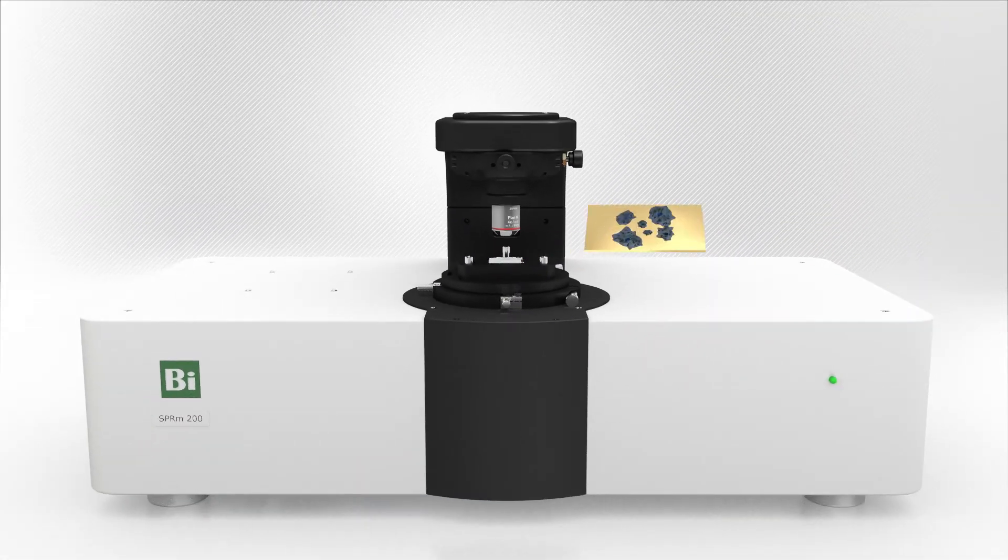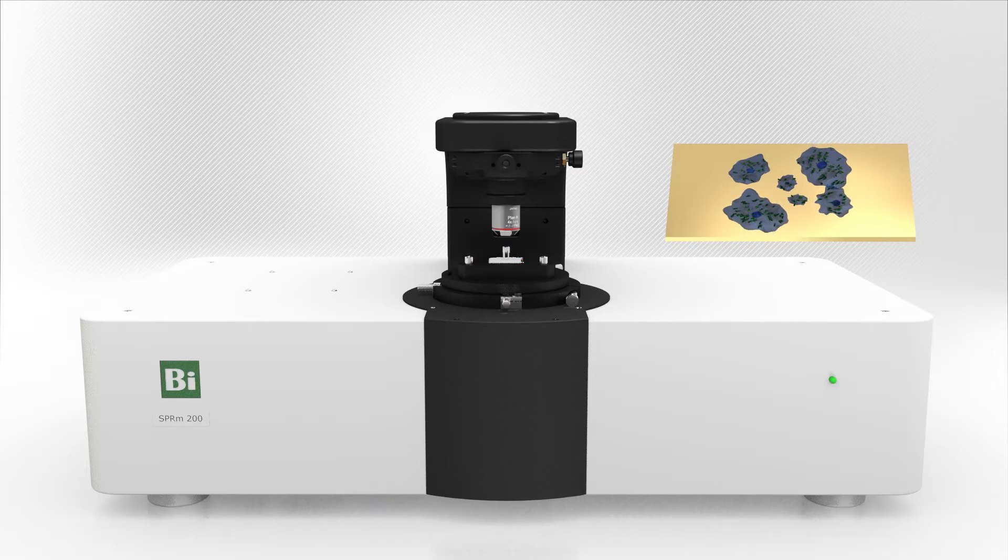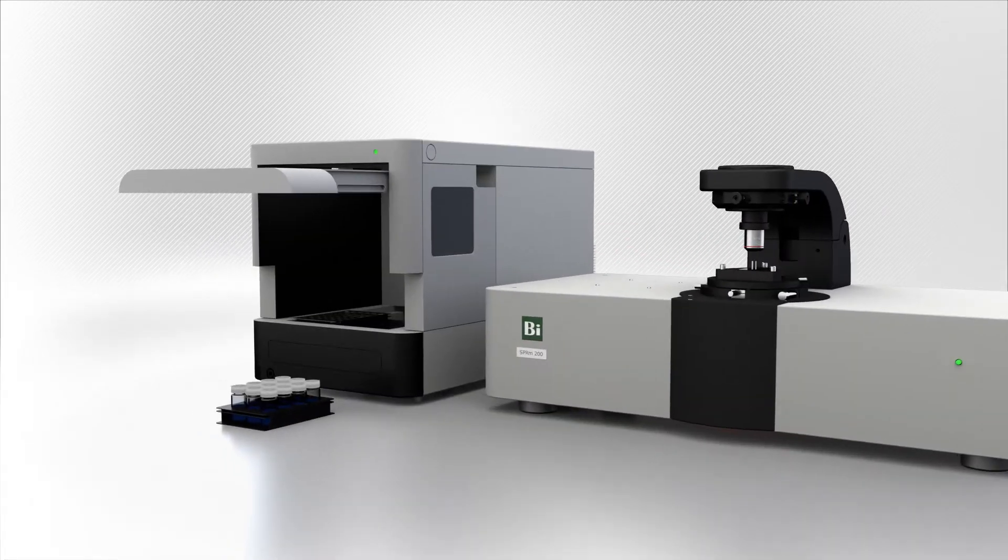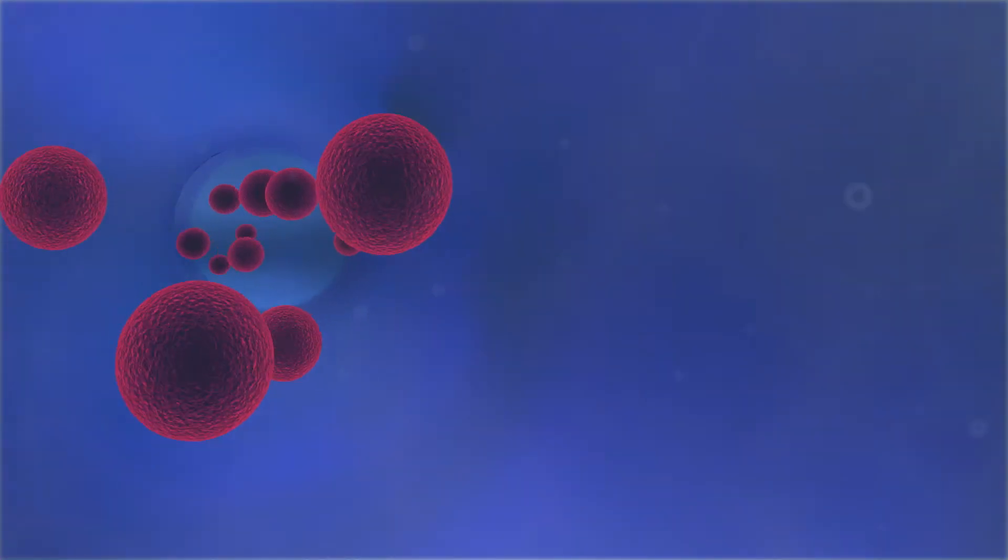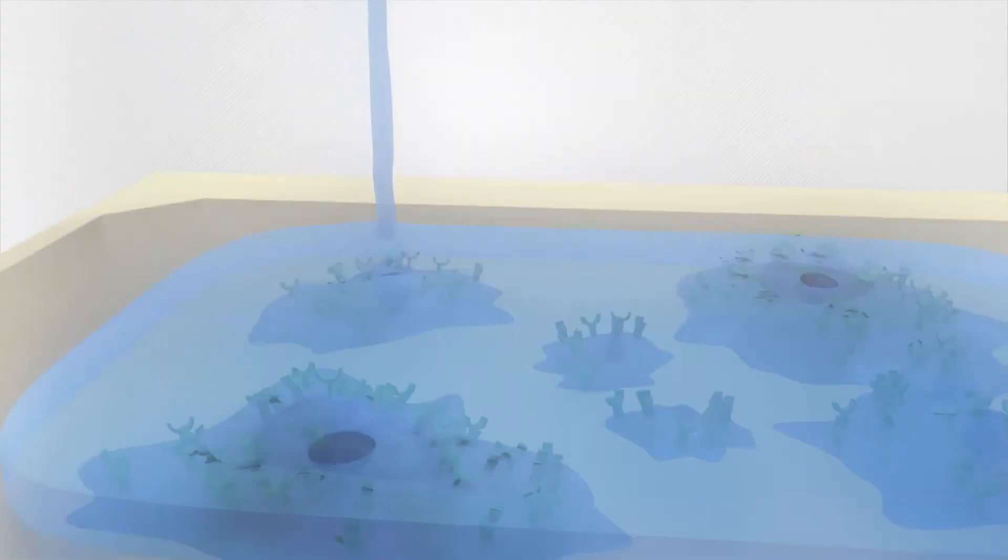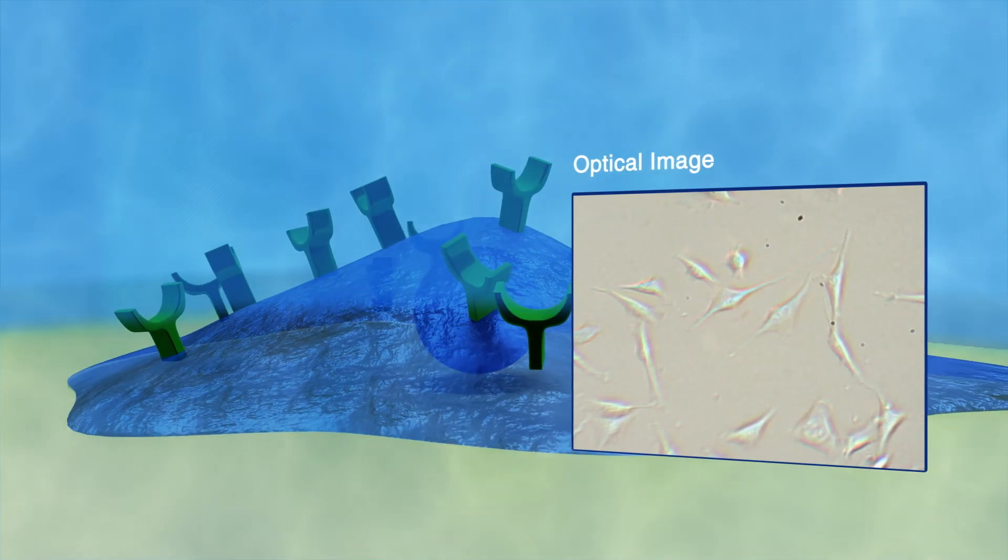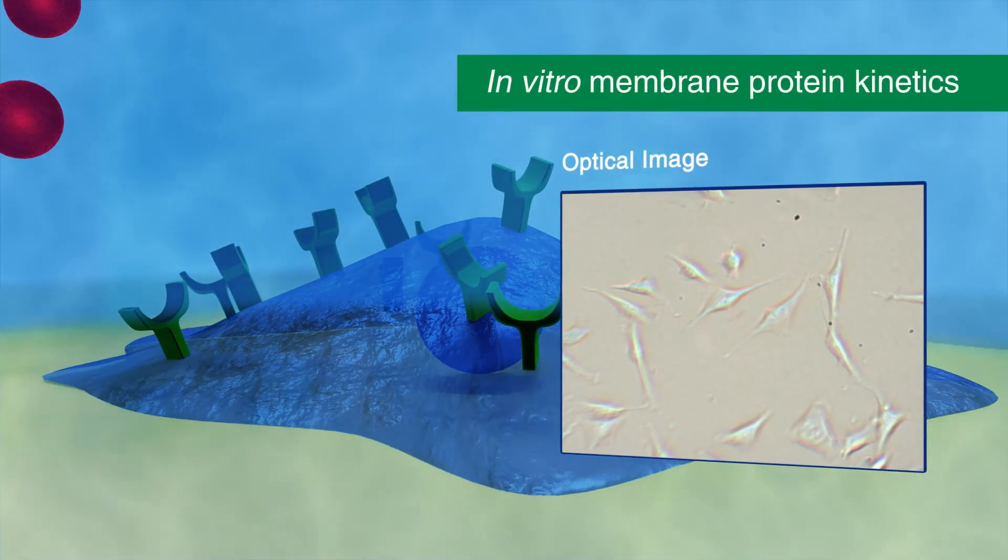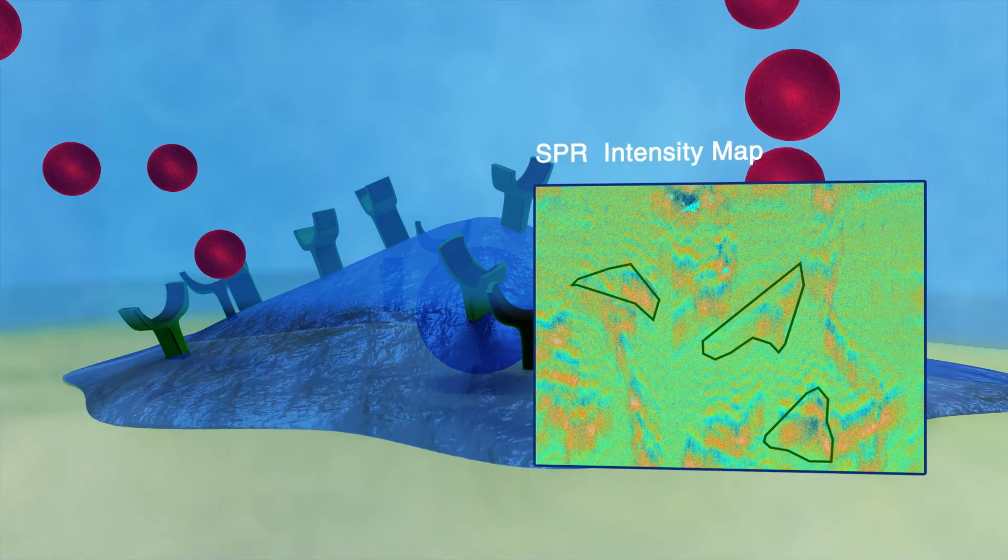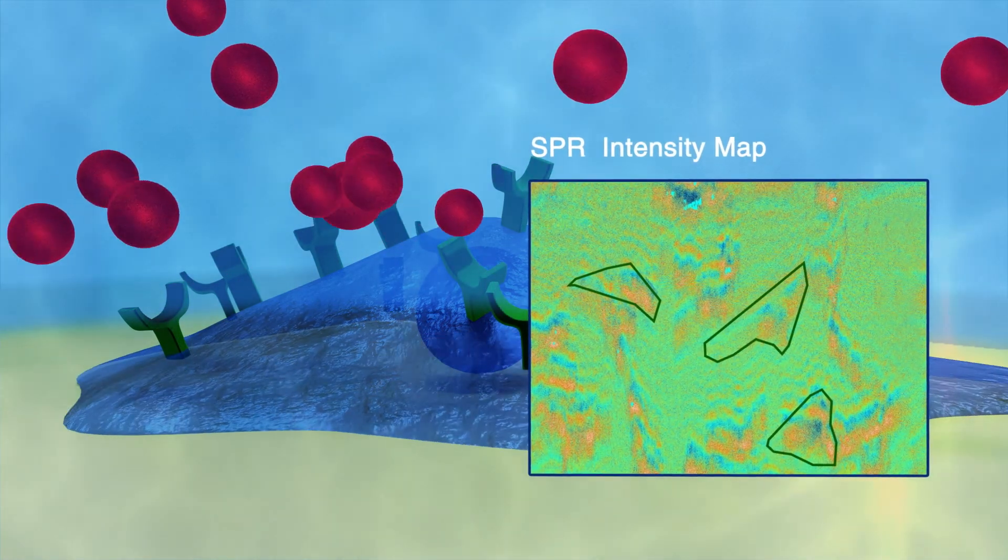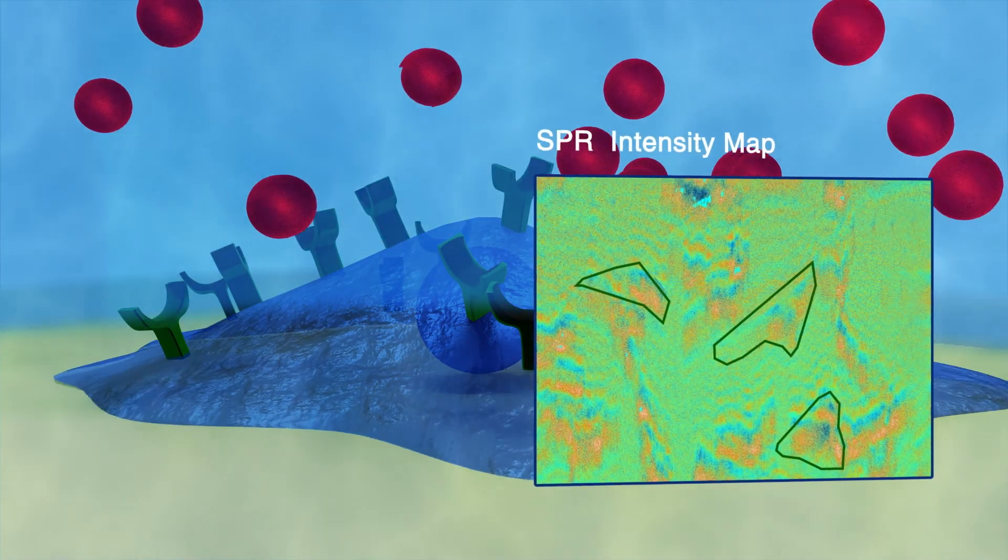In SPRM200, the cells are grown directly on the sensor chip, allowing the membrane proteins to be in their native environment. With SPRM200's autosampler, drug targets are delivered to the sensing area, and together with Biosensing Instruments' patent-pending technology, the simultaneous spatial visualization of cellular structures and real-time interaction measurements of the drug and membrane proteins can be done in vitro, without the need to extract proteins from the cell.